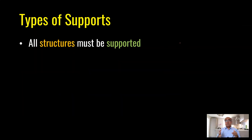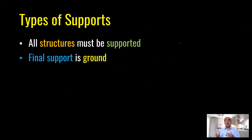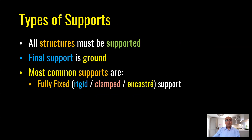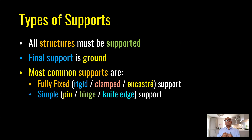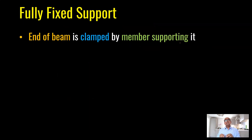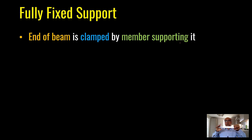Types of supports: all structures must be supported, with the final support normally being the ground. The most common supports are fully fixed (rigid, clamped, or encaster) support, simple pin or hinge or knife-edge support, and roller support. A fully fixed support means the end of the beam is completely fixed with the supporting member — when loading is applied, it will not move up, not move horizontally, and will not rotate.